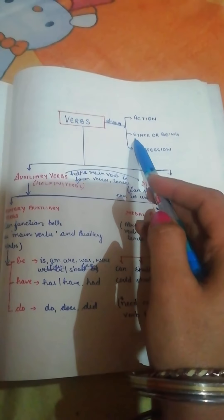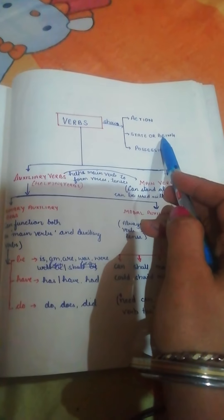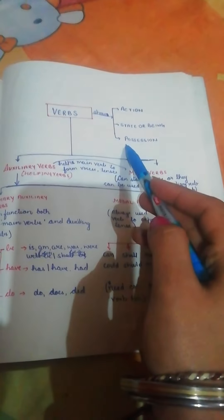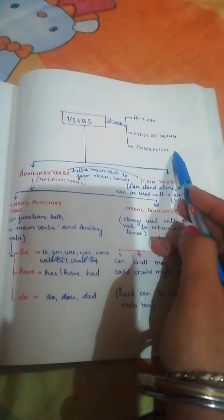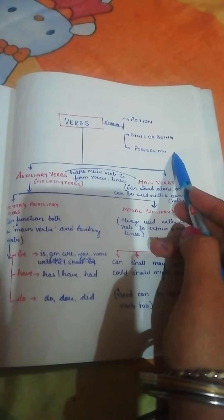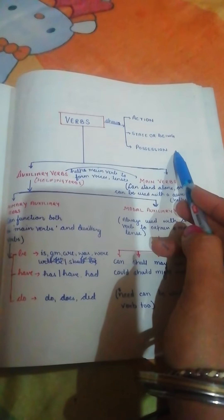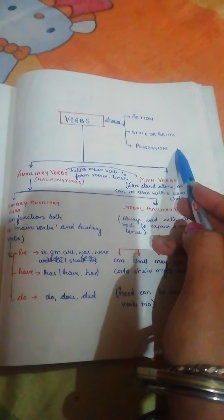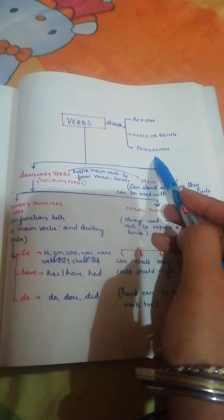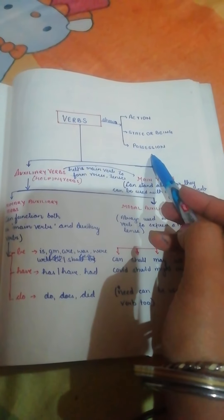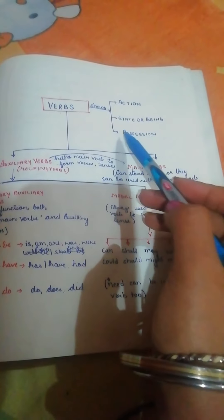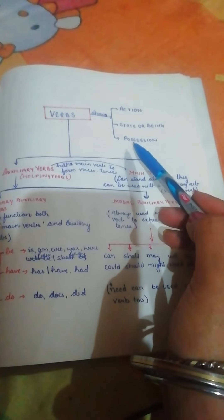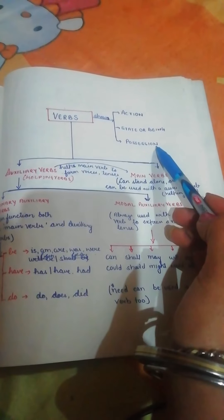When I talk about state or being, the verbs denote whether the action is in present or past — what is the state. Then possession: some verbs show possession. For example, 'I have a pen.' Here the verb is 'have.' Whose pen is this? I have — so when I use 'have' here it shows possession. In this case the verb is not dealing with action but instead shows possession.